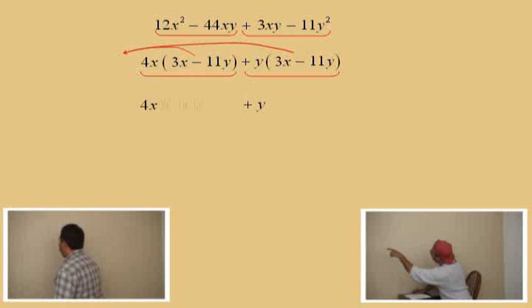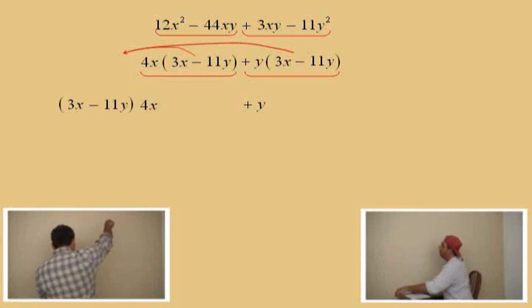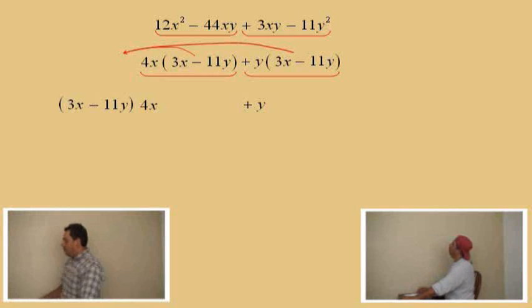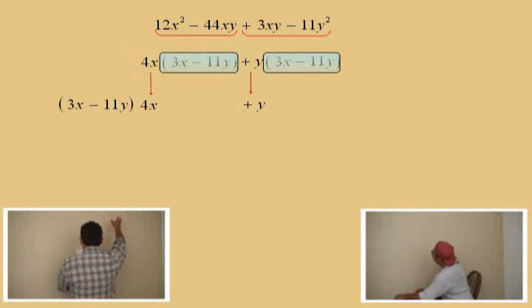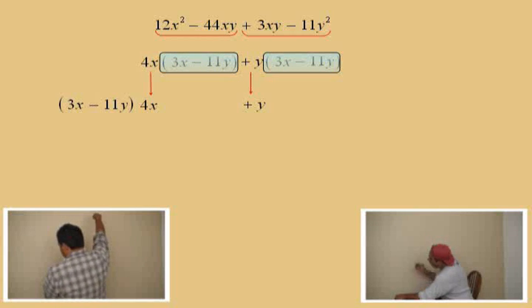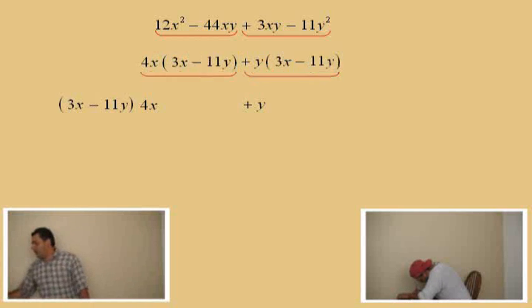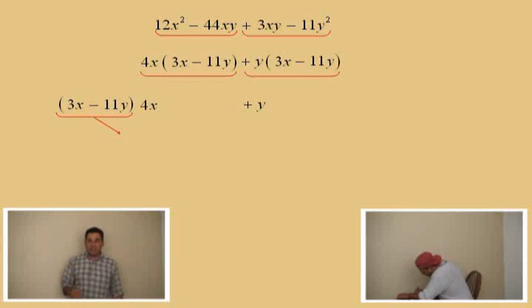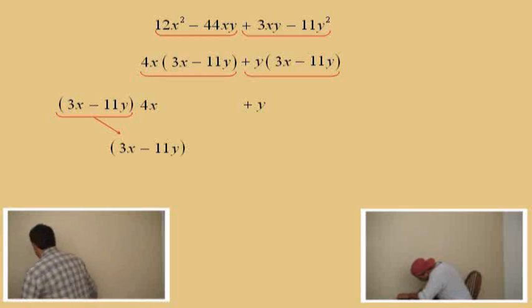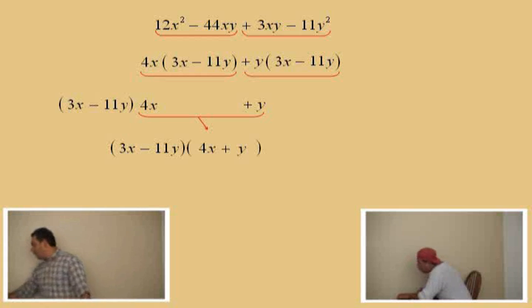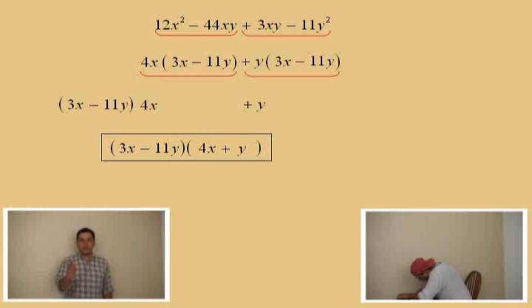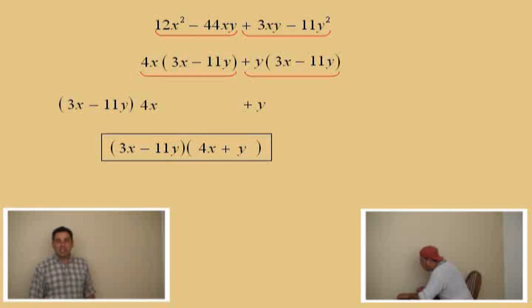We take it out in front and notice what's left over, Charlie? 4x plus y. 4x plus y. Very good. And again, we shade out those 3x subtract 11y's and we realize what's left over, Charlie? 4x and the plus y. There we go. So, now, we bring down our 3x subtract 11y and bring down our 4x plus y and all we got to do is box our answer there. And that takes care of factoring by grouping.